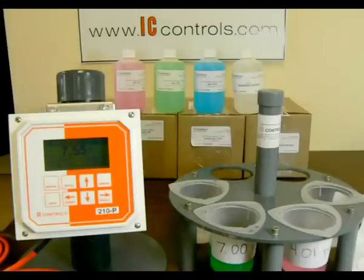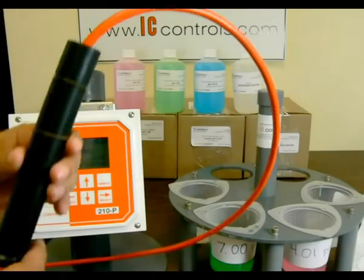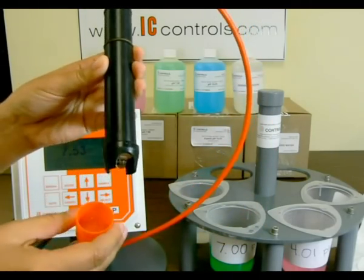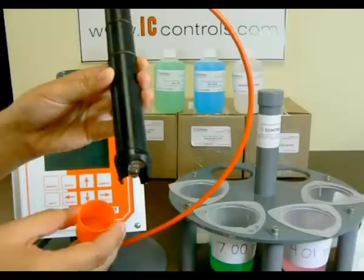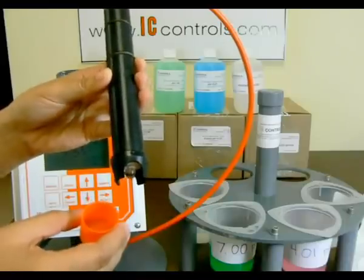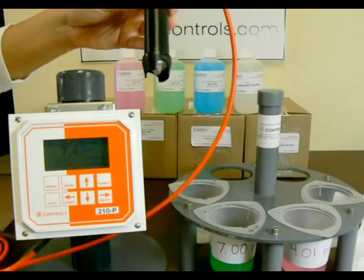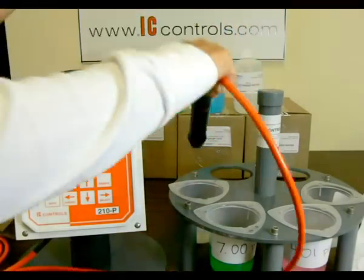IC Controls sensors come protected with an orange cap that contains pH storage solution to keep the sensor moisturized. Ensure you have set up your temperature to match the ambient temperature, otherwise your readings will be off. Remove the protective cap and rinse the sensor in deionized water.